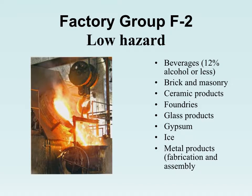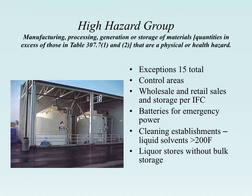F-2 is lower hazard manufacturing — things like foundries that involve a lot of heat but aren't highly flammable. Examples include brick factories, masonry products, ceramic and glass products, gypsum (drywall), ice, and metal products. These are all considered low-hazard in the manufacturing category.